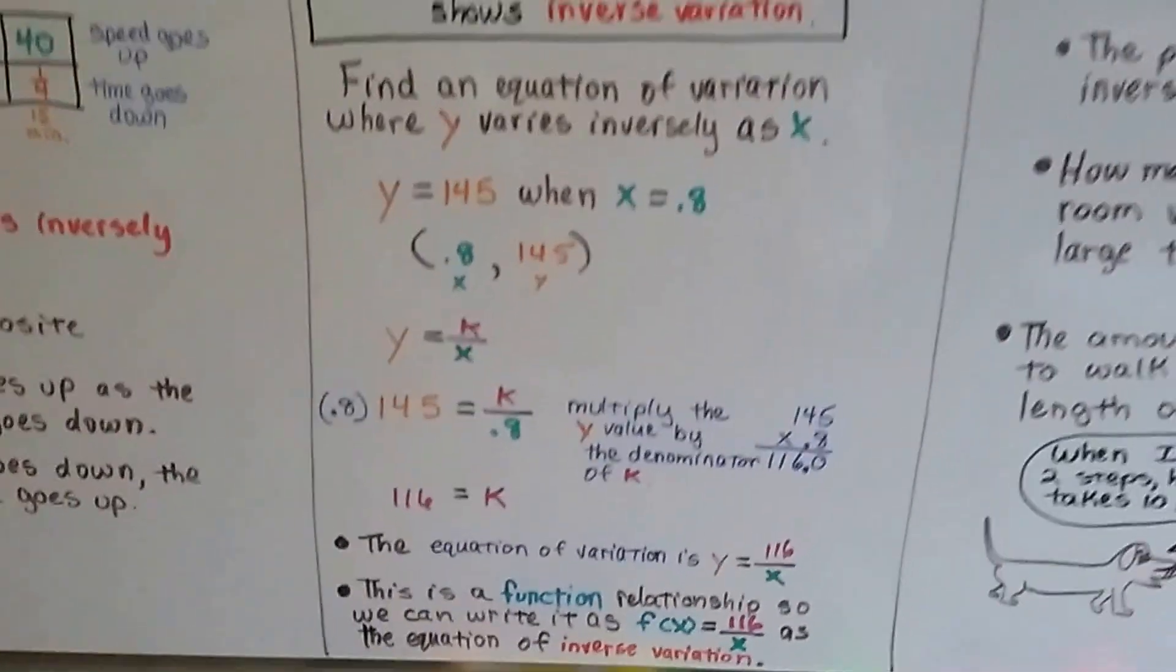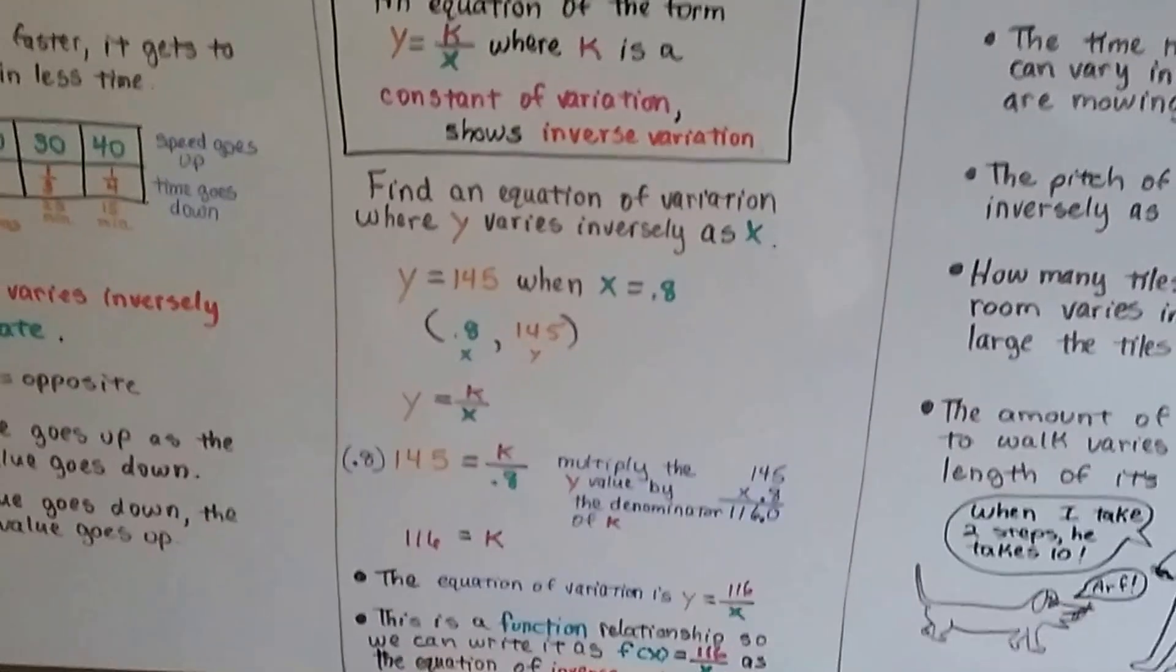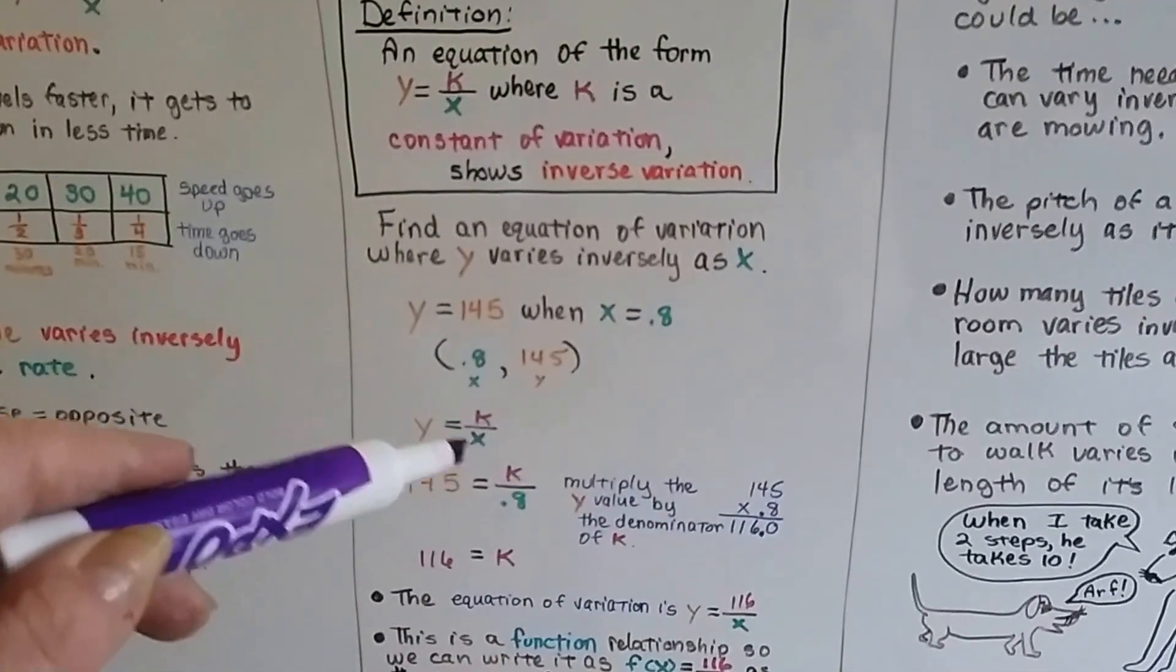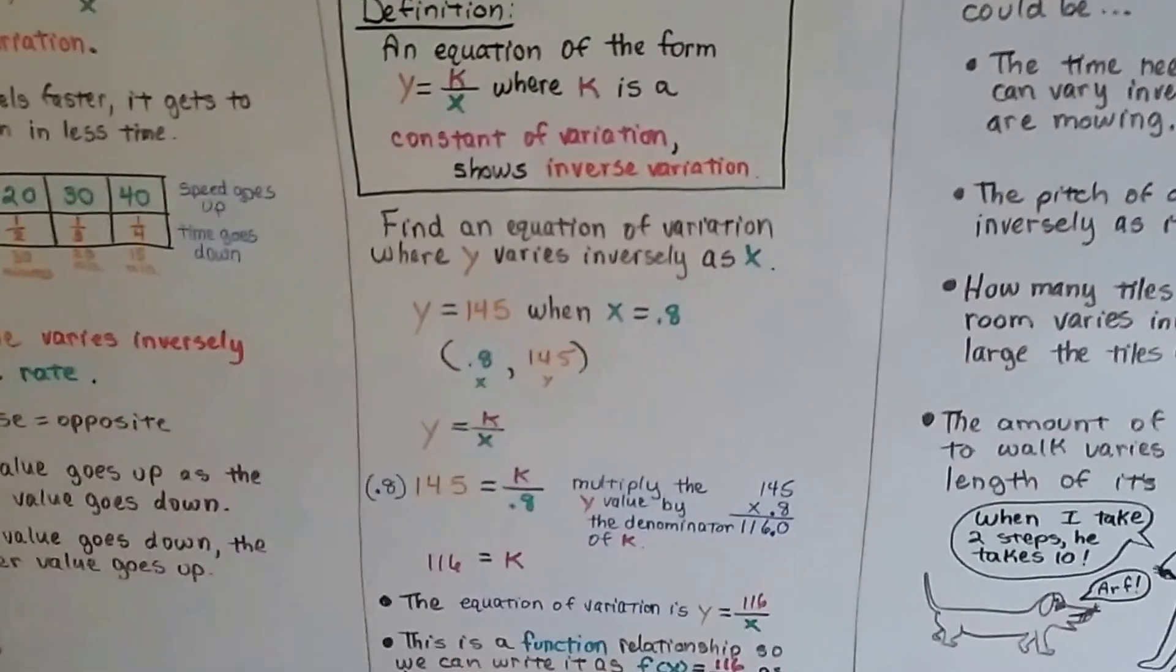So it's very similar to what we were doing in the previous two videos with the direct variation, except now, instead of multiplying k times x, we're dividing k by x.